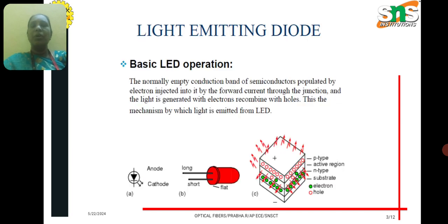Now we are going to see the first type of light emitting diode. The basic LED operation, we know already that when electrons and holes are recombined, the light is emitted from the LED.